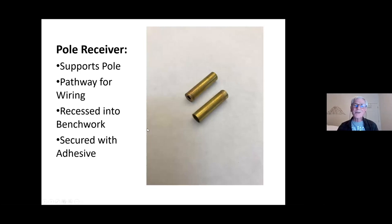So this is what these pole receivers or supports look like. It looks actually like a little cartridge for ammo, but it isn't. It's just the brass washer soldered on the base of the tube and these materials, I just got at my local Ace Hardware. So nothing fancy about it, secured with adhesive in the bench work.